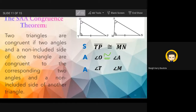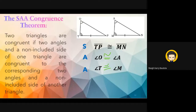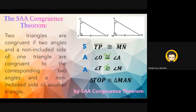We have identified side, angle, angle — congruent by SAA. Mendoza gives the congruent statement: triangle TOP is congruent to triangle MAN by SAA congruence theorem. Remember: it can also be called AAS if the angle comes first, then angle, then side.